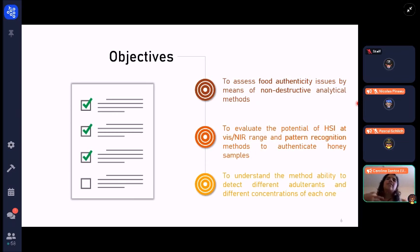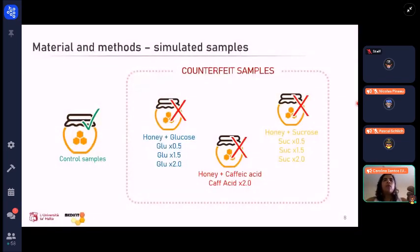This is to understand the method's ability to detect different types of adulterants in different concentrations and move forward for real-life samples. We are using simulated samples to evaluate the method in general. We have control samples that are authentic honey samples, and we adulterated those samples increasing the concentration of glucose, caffeic acid, and sucrose in different proportions.